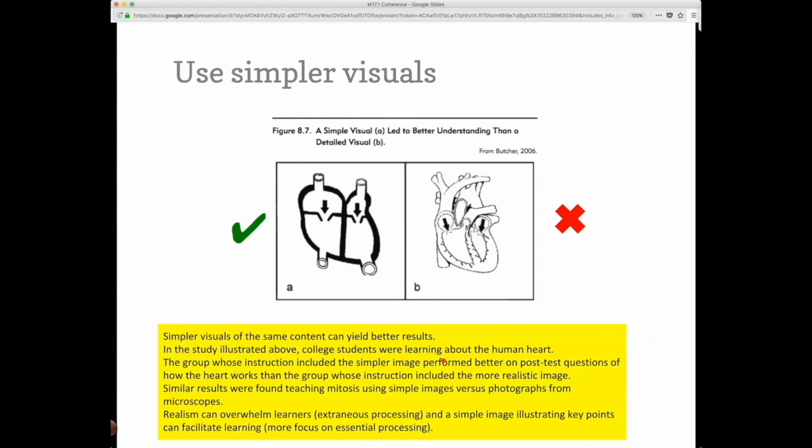So here's a great example of a case where a simpler image here, this is of the heart and the four chambers, and there's a circulation that goes to the body and one that goes to the lungs to oxygenate, to provide oxygen to the blood.